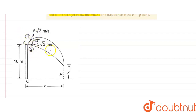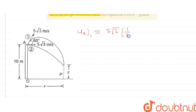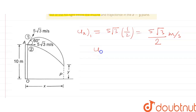The x-component of velocity for shot one is ux = 5√3 · cos(60°) = 5√3 × (1/2) = 5√3/2 meters per second. The speed of the second shot in the x-direction is 5√3 meters per second, as it fires horizontally.